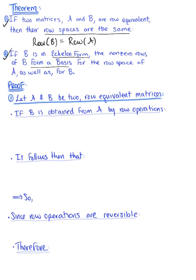We need to prove this. Let's look at the proof for the first statement: if two matrices are row equivalent, then their row spaces are the same. If matrix B is attained from matrix A by row operations, the rows of matrix B are linear combinations of the rows of matrix A.